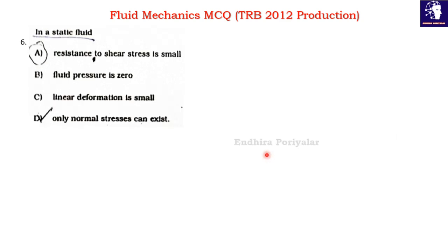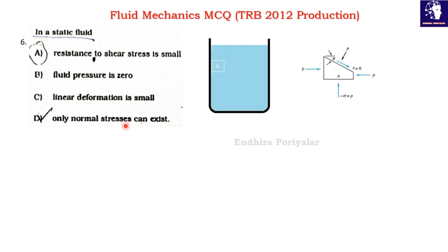Question 6: In a static fluid — Option A: the resistance to shear stress is small; Option B: fluid pressure is zero; Option C: linear deformation is small; Option D: only normal stress can exist. In a static fluid, shear stress is zero and only normal stress can exist. Option D is the correct answer.